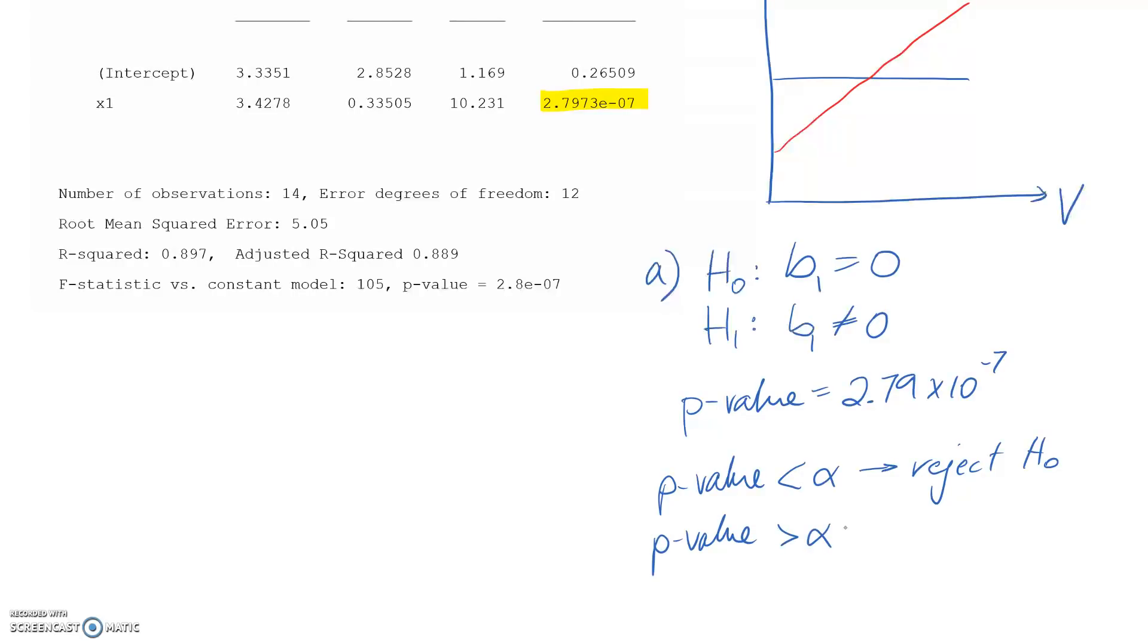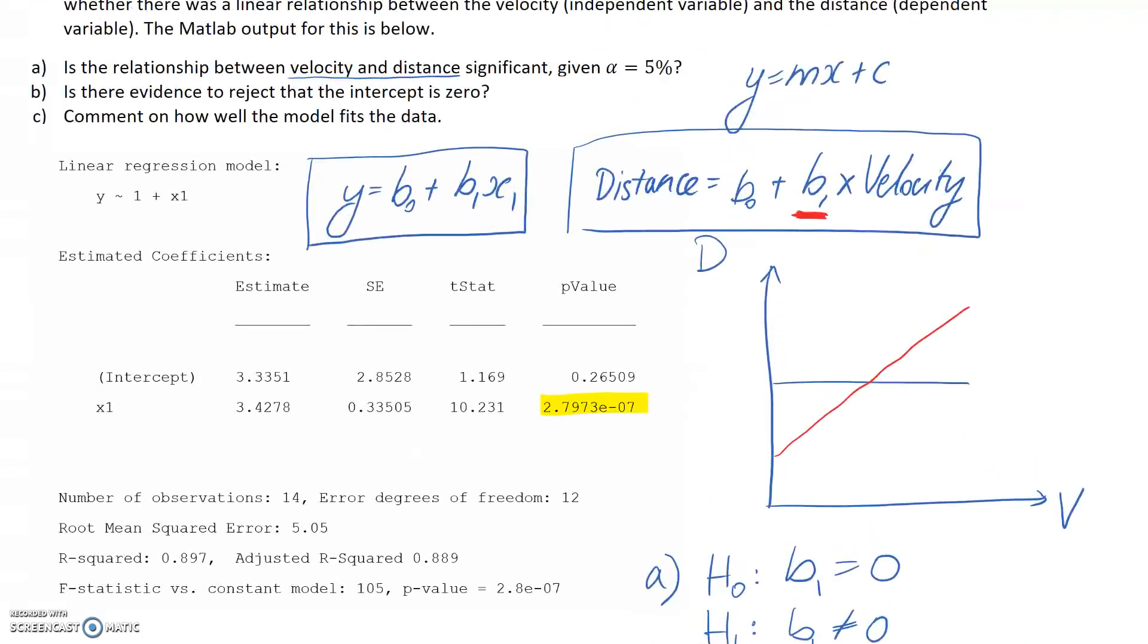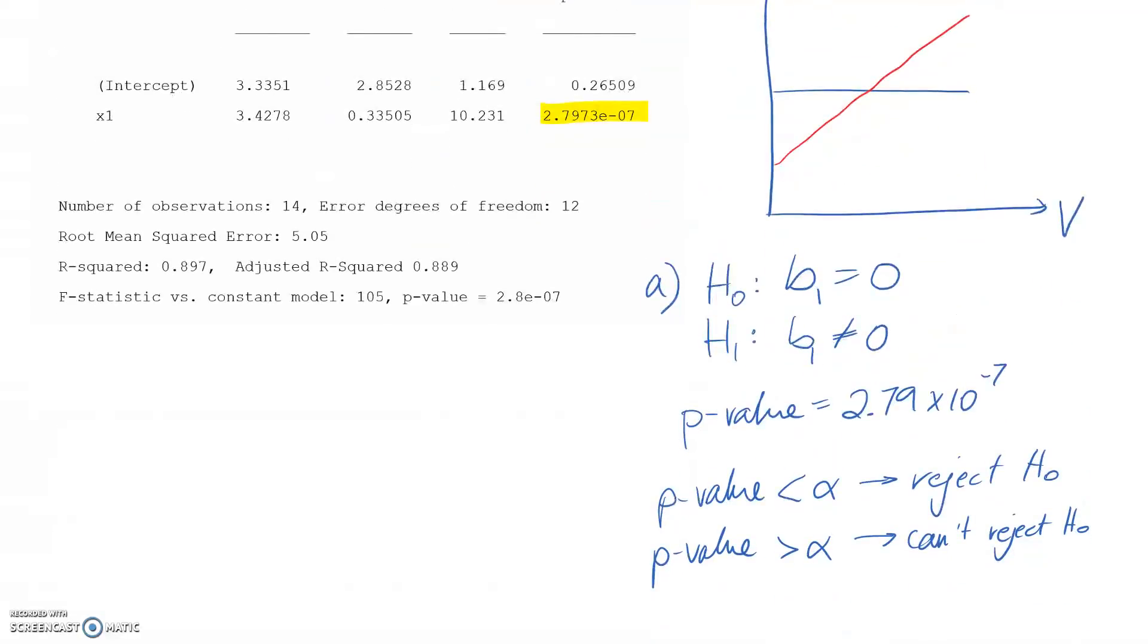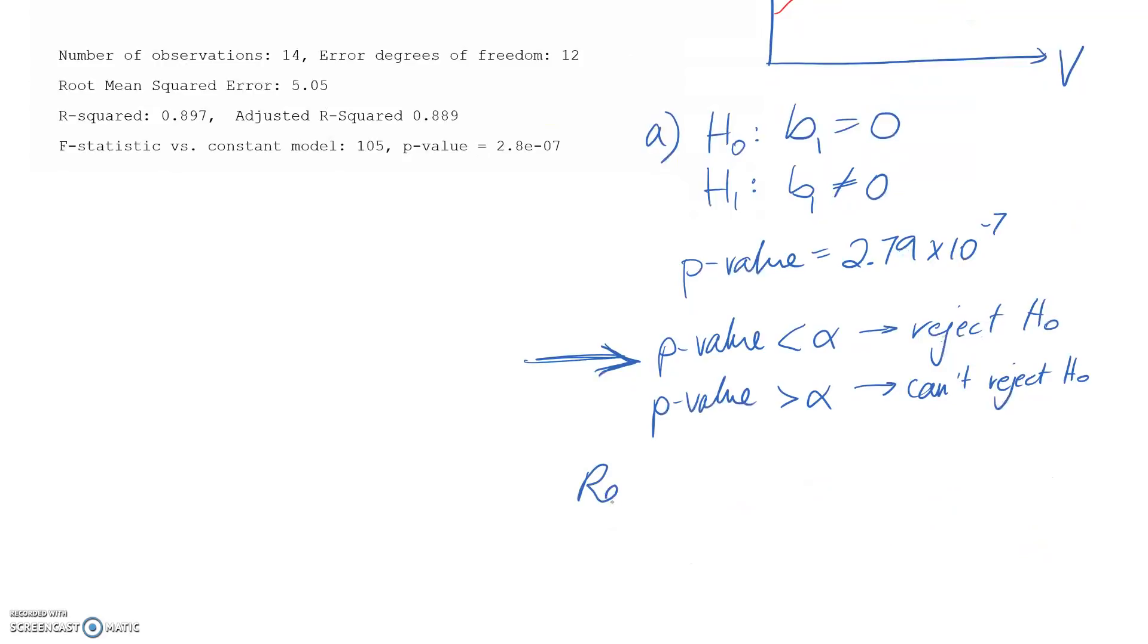Whereas if you have the opposite case, so your p-value is greater than the alpha value, then you can't reject H0. It's just not enough evidence. So in this case, we have a p-value which is much, much less than alpha. Alpha is 5%, or if you put it in decimal form, 0.05. So therefore, we're definitely sitting in this one here. So that means that we're going to reject our null hypothesis, which is that b1 is equal to 0.